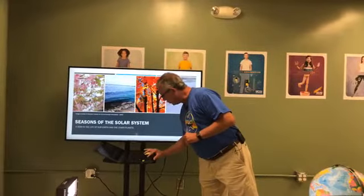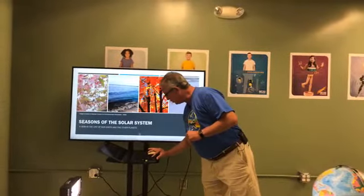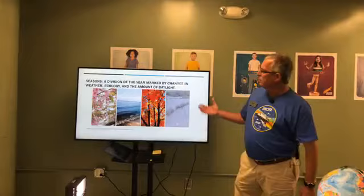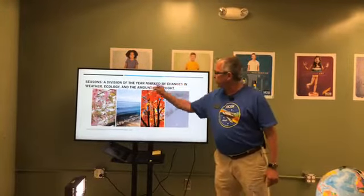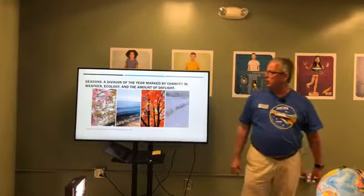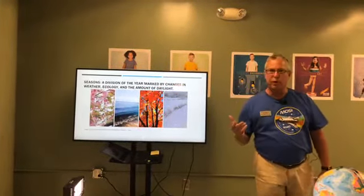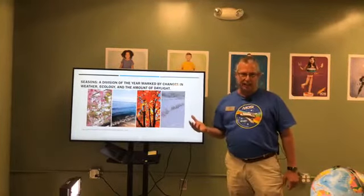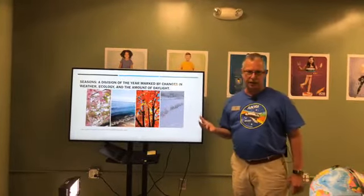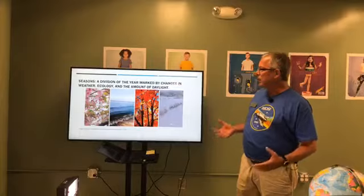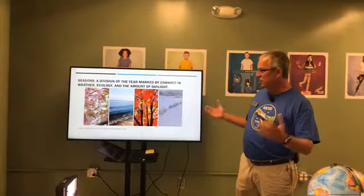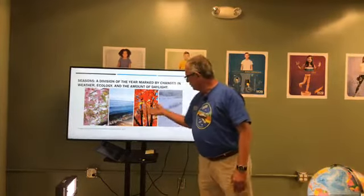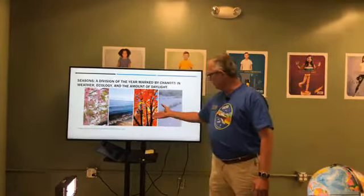First thing, of course, is we do have different seasons on planet Earth. Basically, what a season is is simply a division of the year marked by changes in weather, ecology, and the amount of daylight that you get wherever you happen to live. This results in the seasons we all know: spring, summer, fall, winter.